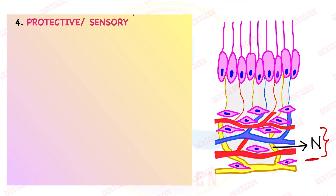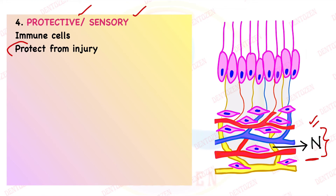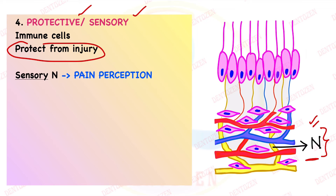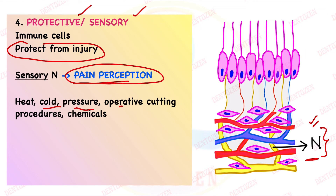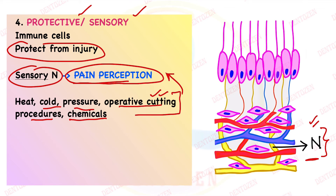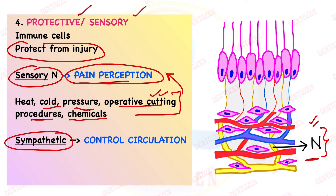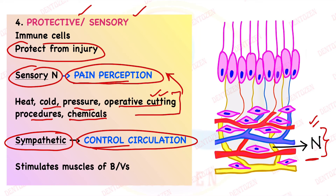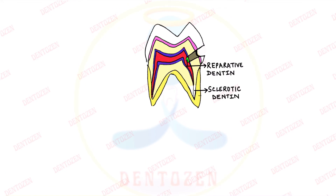The fourth function is related to nerves — the protective or sensory function. Sensory nerves help in pain perception, which protects us whenever there is heat, cold, pressure, operative or cutting procedures, cavity preparation, or chemical stimuli. Immune cells also protect from injury. Additionally, sympathetic nerves control circulation in the pulp by stimulating the muscles of the blood vessels, so that is the protective and sensory function of the pulp.